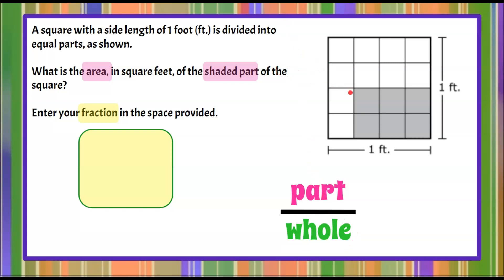So our shaded part is this area right here, and we're going to count. It has one, two, three, four, five, six of those squares are shaded of the big square.